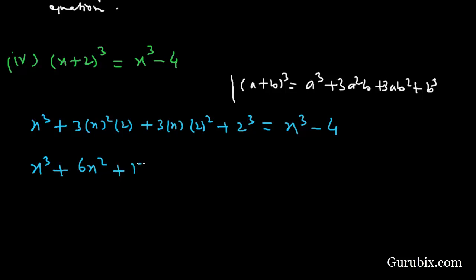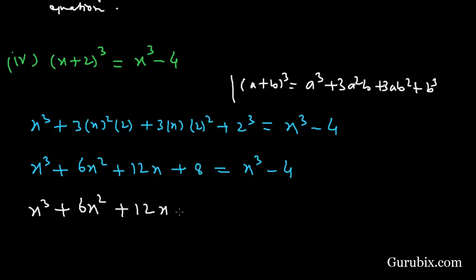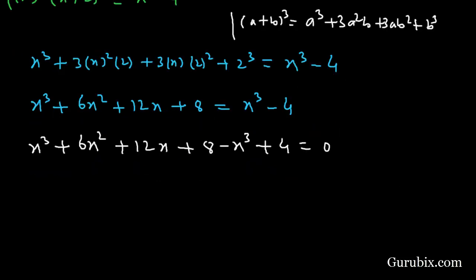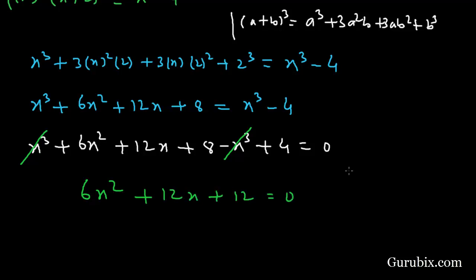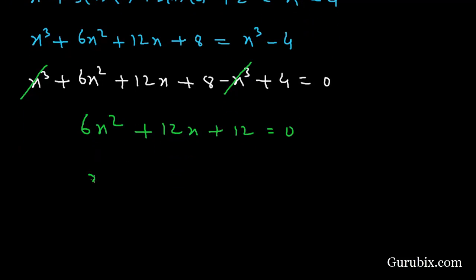Taking the right hand side values to the left hand side: x³ + 6x² + 12x + 8 - x³ + 4 = 0. Cancelling x³ terms, we have 6x² + 12x + 12 = 0. Dividing both sides by 6, we get x² + 2x + 2 = 0.